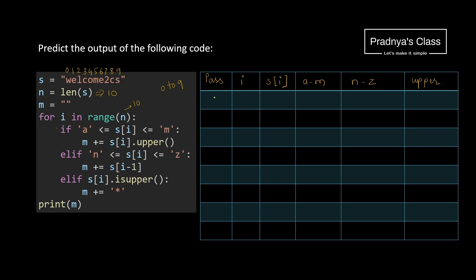In pass 1, the value of I is 0. S of 0 is the first character, W. It satisfies the second condition because it is in the range of N to Z. In that case, we take S of I minus 1. I is 0, so 0 minus 1 is minus 1. At the position of minus 1 we have the character S. So S gets concatenated to the empty string.